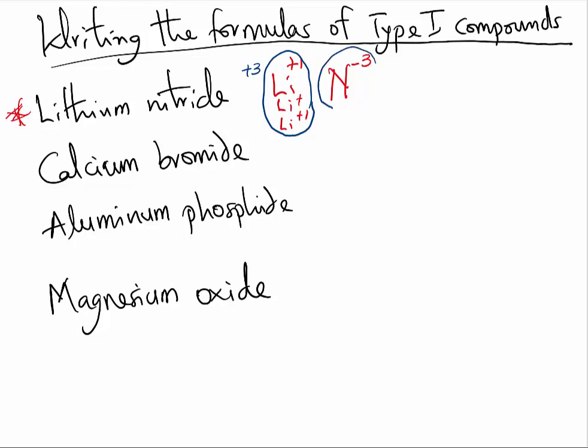And the total number of electrons to be given out will be 3, which will completely balance out the total number of electrons to be gained. So the formula of the compound that can be formed between lithium and nitrogen will be Li3 because there are 3 lithium and 1 nitrogen. So the formula for lithium nitride will be Li3N.